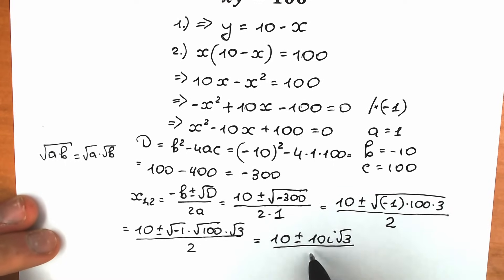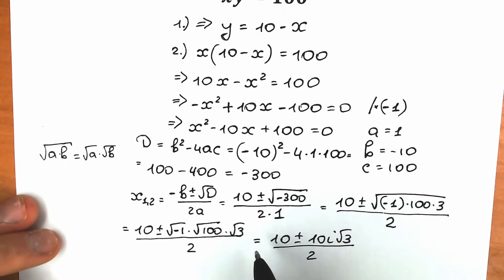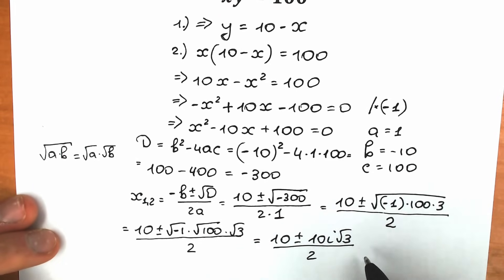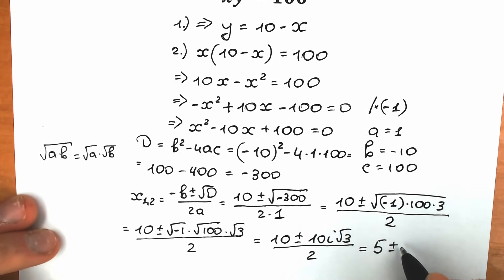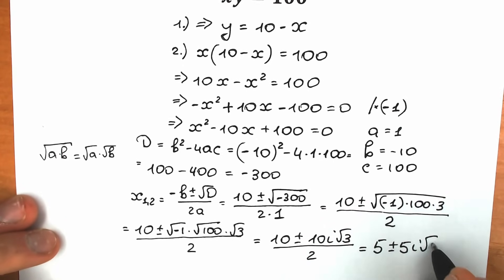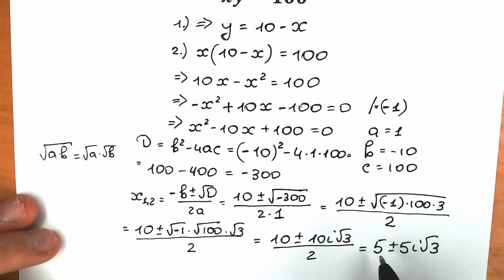We can divide the whole expression by 2, giving us 5 plus or minus 5i square root of 3.